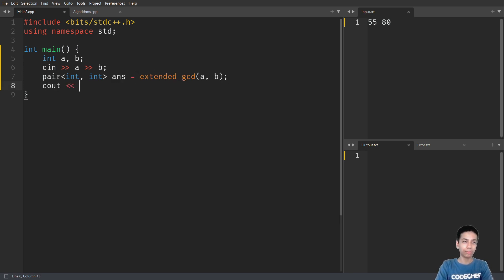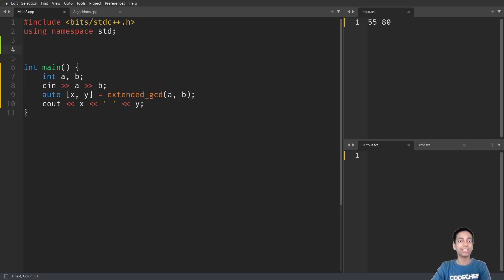Let's output, in fact, let's destructure it. We can have auto X and Y equals this, and we can output X and Y. Let's implement this extended GCD function that will take two numbers A and B.